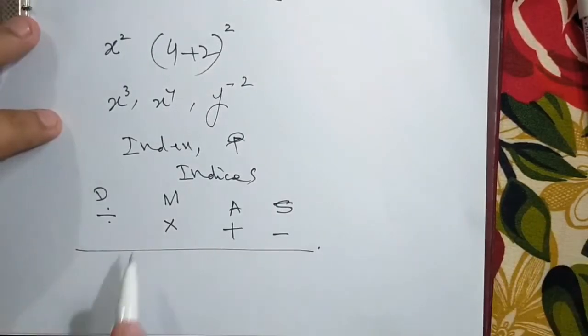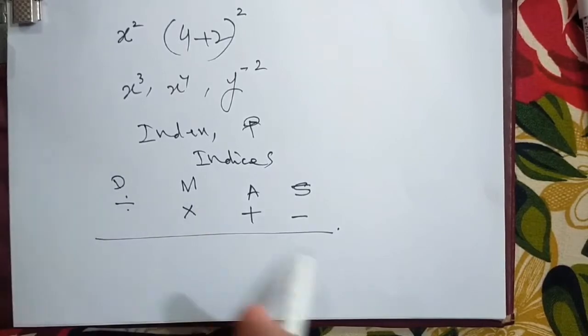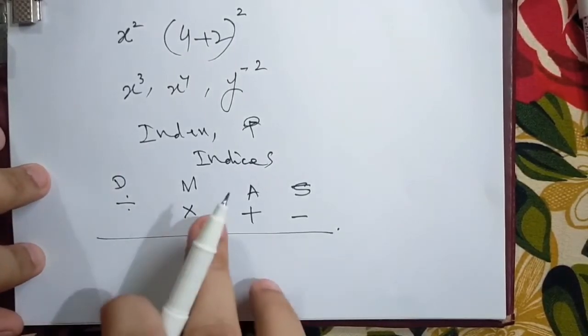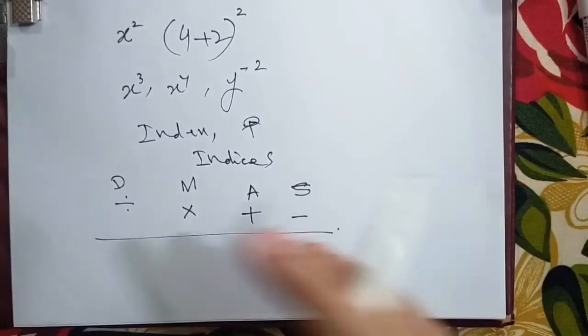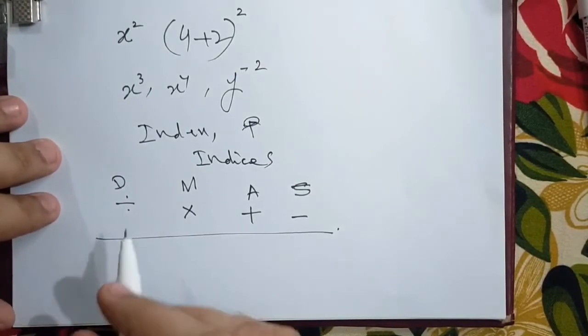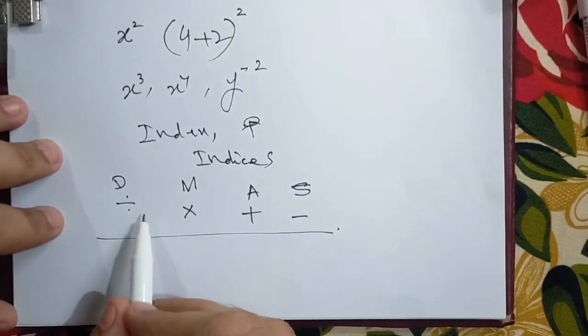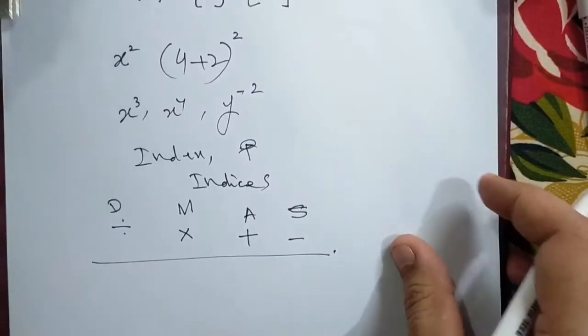But if we solve addition and subtraction at one time, this will yield the same answer. But there's difference between division and multiplication. If we solve multiplication before division, this can yield another answer. The answer can be different, so this is of utmost importance that division should be solved first and then multiplication.